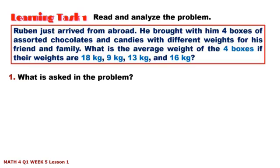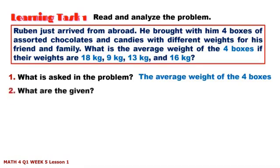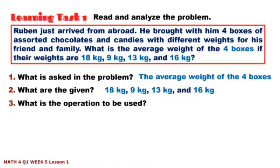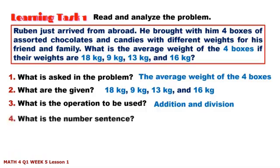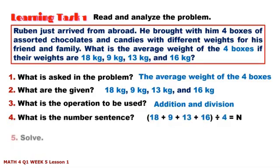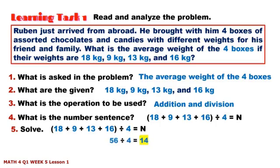What is asked in the problem? The average weight of the four boxes. What are the given? 18 kg, 9 kg, 13 kg, and 16 kg. What is the operation to be used? Addition and division. What is the number sentence and solution? You need to add first: 18 + 9 + 13 + 16 = 56, then divided by 4 equals 14.